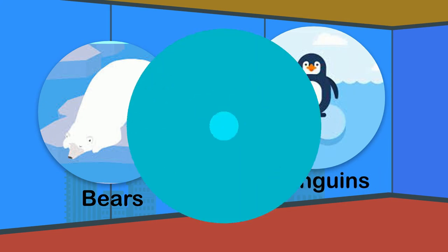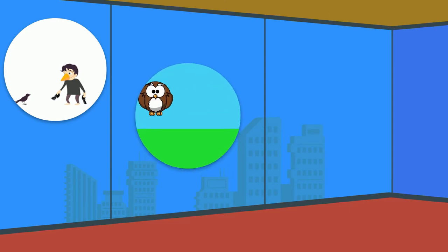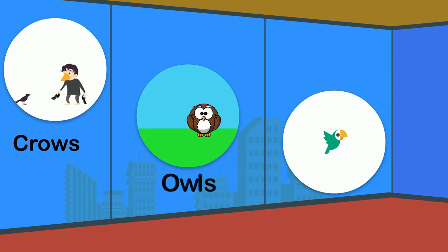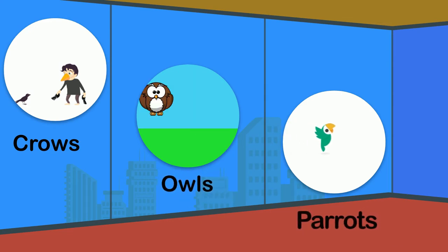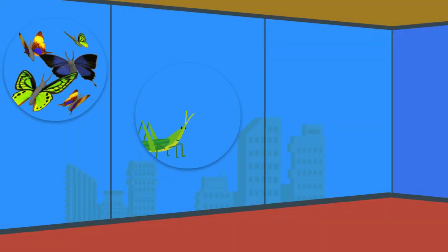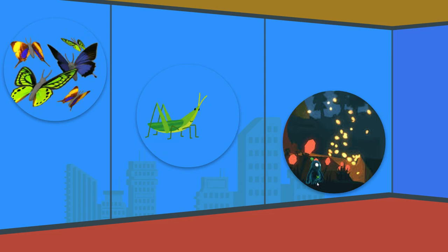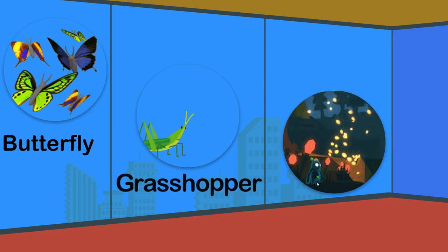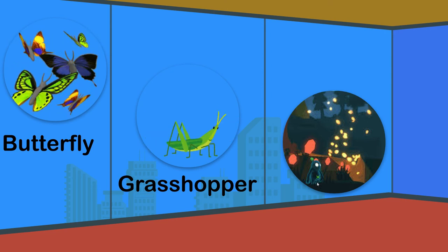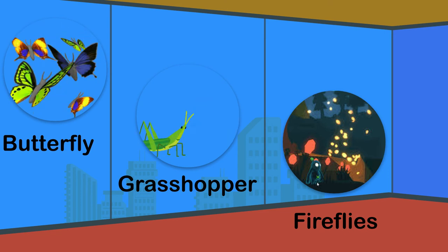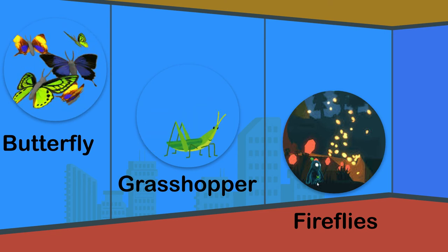Some animals fly, which we call birds, like crows, owls, and parrots. Some insects also fly, like butterfly, grasshopper, and fireflies. Birds often make nests on the trees to live.